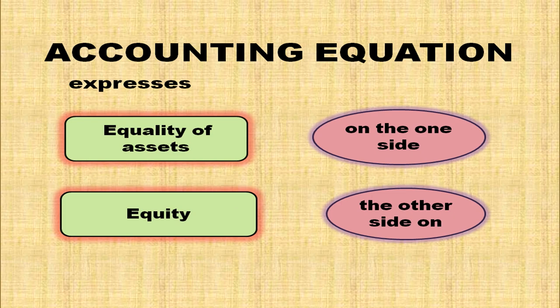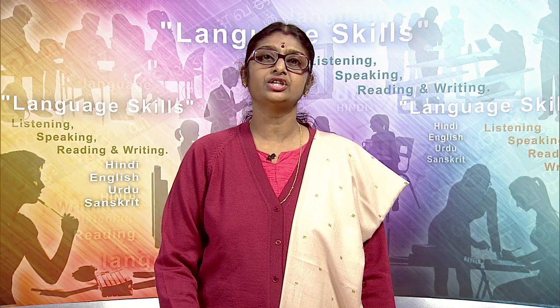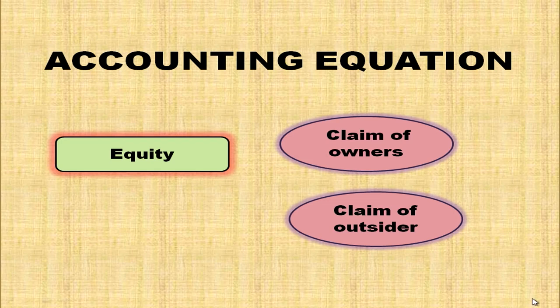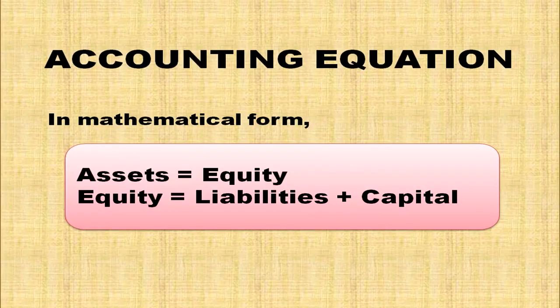Accounting equation expresses equality of assets on one side and equity on the other side. Equity can be the claim of owners or claim of outsiders. In mathematical form, accounting equation can be expressed as: Assets = Equity, where Equity = Liabilities + Capital.